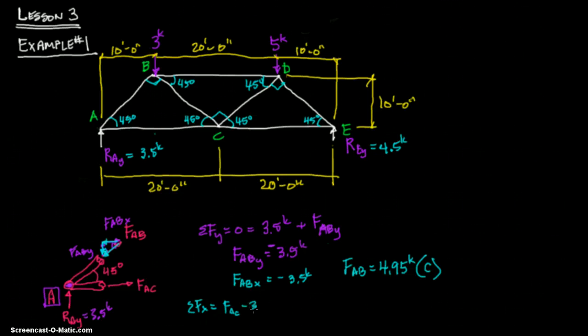FAC plus negative FAB_X, which FAB_X is, sometimes I just do negative 3.5 kips. So we know that FAC equals 3.5 kips. And that's going to be in tension. Because since that's going negative, this has to go positive. So we were correct in that assumption. Remember, if we assume it's going out, we assume it's tension, and when it becomes positive, that means it is in tension.